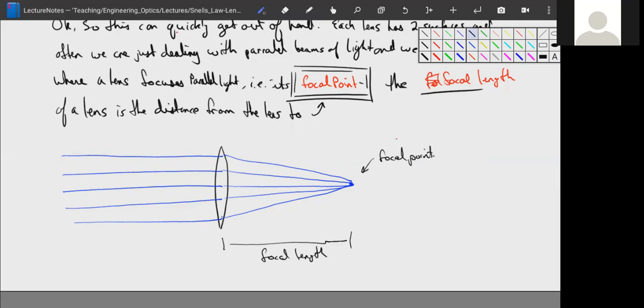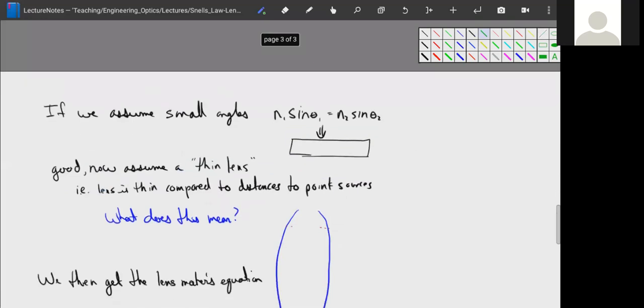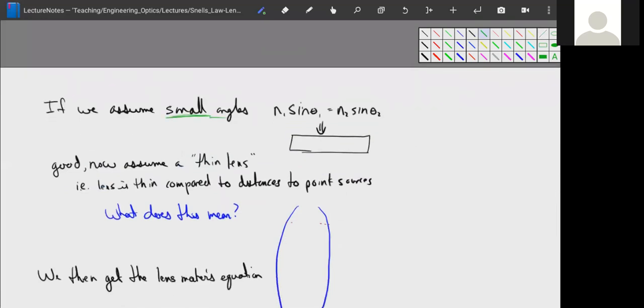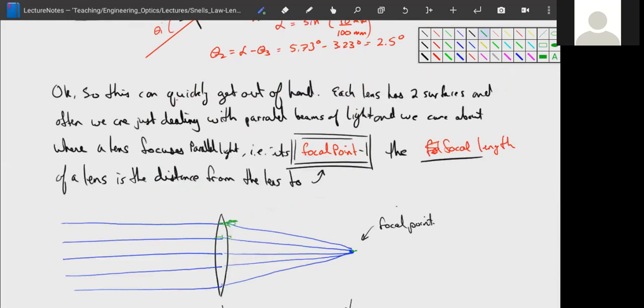So rather than doing ray tracing for each one of these lenses, we could go in here and calculate each angle. We can assume that the lens is well made and we can make a couple other very important assumptions.